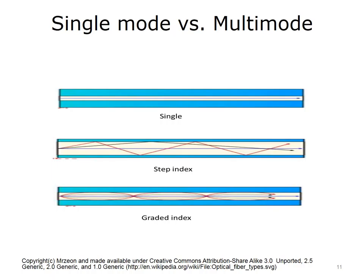Fiber transmits signals in two ways: single-mode and multi-mode. Single-mode fiber carries light pulses along a single path, so only one signal can be transmitted at a time. Multi-mode fiber carries many pulses of light at one time. There are two types of multi-mode fiber: step-index and graded-index. With step-index, rays of light are guided along the fiber core by total internal reflection — angle in equals angle out. In graded-index multi-mode, a change in the density of the glass makes the light bend and travel down the fiber.